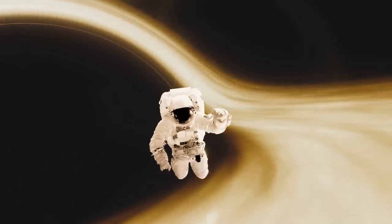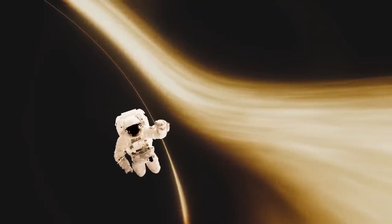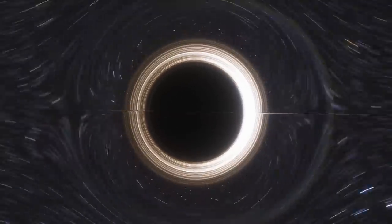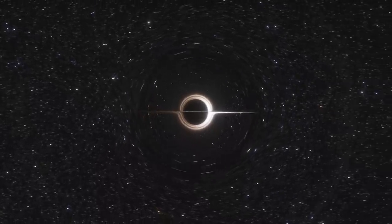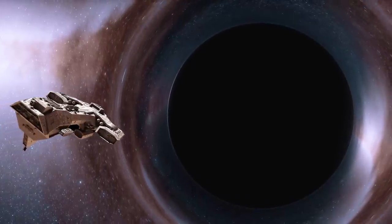And what happens when you fall in is that you could never get out again. And you couldn't even send a signal of light out of the black hole because the gravity is so strong that the light can't escape. The region from which the light can't escape is called the event horizon.